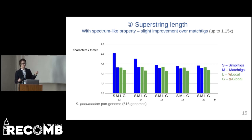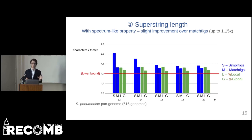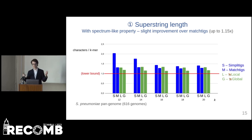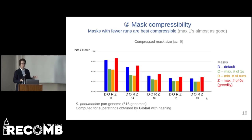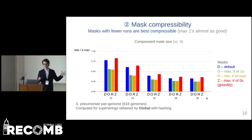The improvements are slight because we are already very close to the lower bound of one superstring character per k-mer. And as superstrings are in general not very well compressible — around 2 bits per k-mer — we focus on compressibility of masks, which can be compressed a lot. On the result obtained by global greedy, we evaluated four different mask objectives.